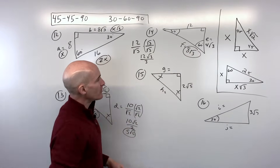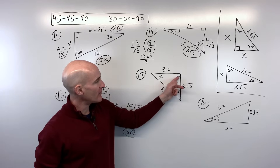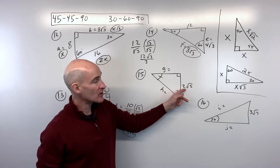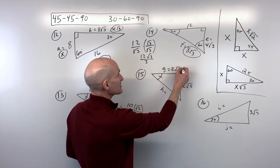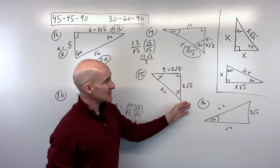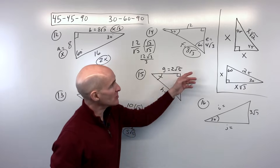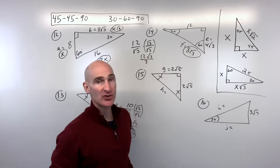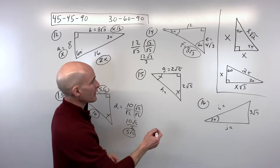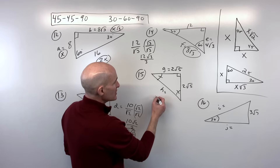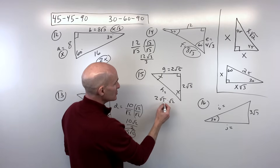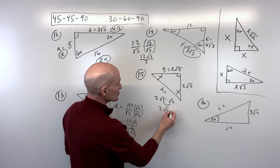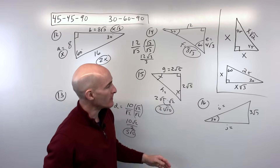For number 15, another 45-45-90. They're giving us the leg, so automatically the other leg is the same: 2√5. To get to the hypotenuse, multiply by √2 — remember, about 1.4 times longer. 2√5 times √2 gives 2√10.